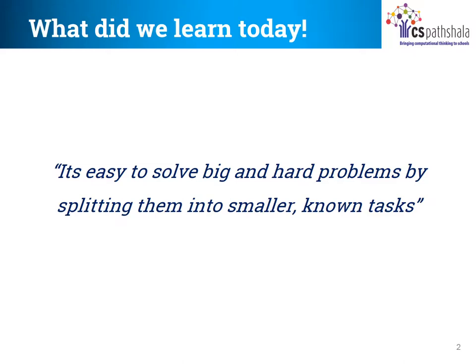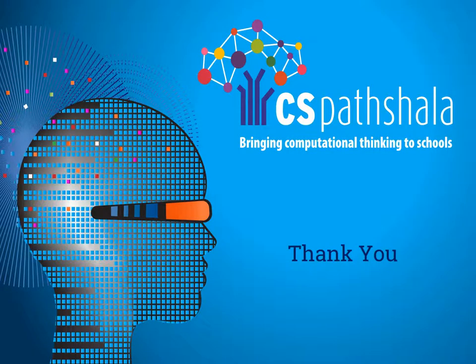So friends, what did we learn today? We learned that it's easy to solve big and hard problems by splitting them into smaller and known tasks. We understood this using two examples. In the first example, we divided a bigger puzzle into smaller puzzles which were easy to solve — thus we found our odd one out, a five in a group of S. In the second example, we drew Mr. Mouse. Drawing him seemed hard at first, but we started drawing him step by step and in the end our Mr. Mouse was ready. I hope you understood this concept and would try it in your daily lives. That's it for today. I hope to see you in the next lesson. Have a great day. Bye-bye.